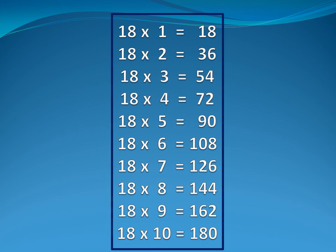Now eighteen table. Eighteen one is eighteen. Eighteen two is thirty-six. Eighteen three is fifty-four. Eighteen four is seventy-two. Eighteen five is ninety.